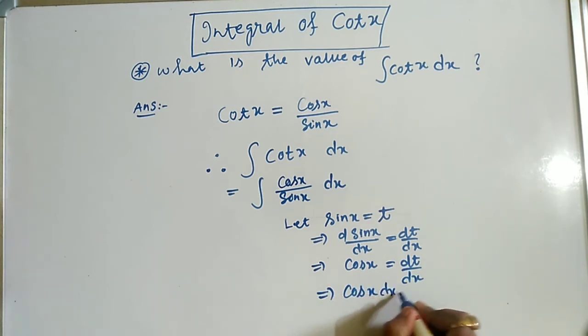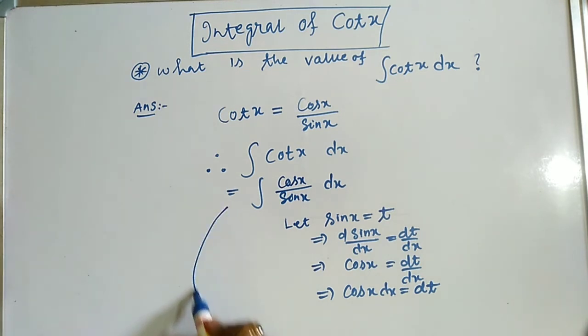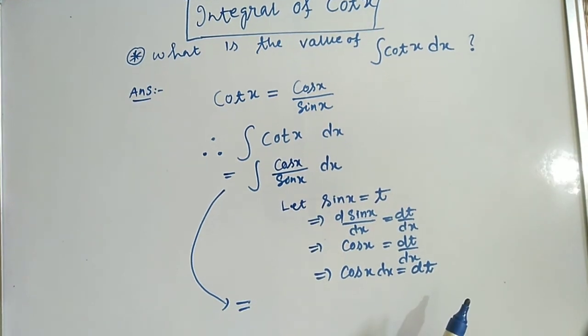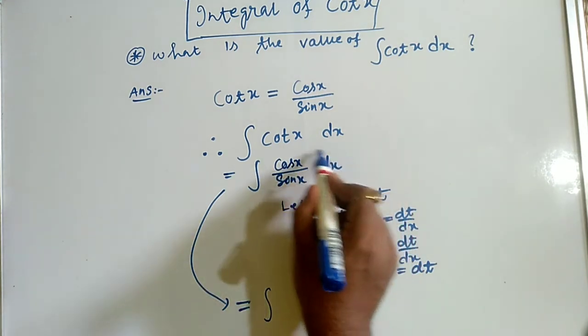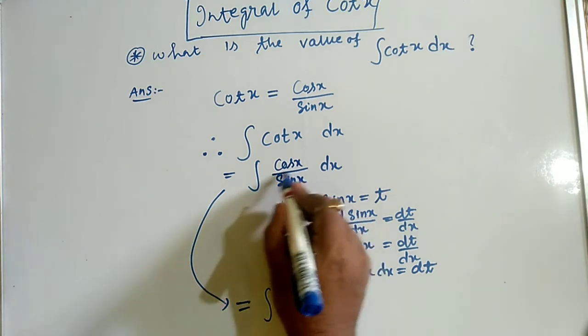So this implication: cos(x) dx equals, by cross multiplication, we obtain dt. Now we want to proceed with this problem by writing cos(x) dx as dt.